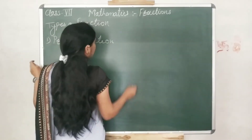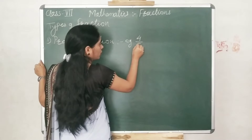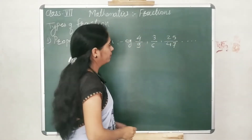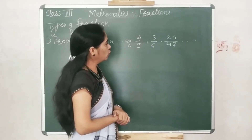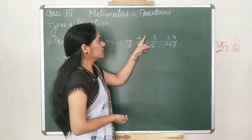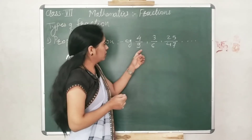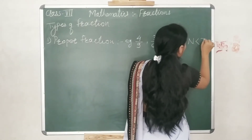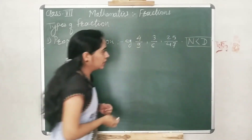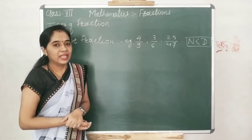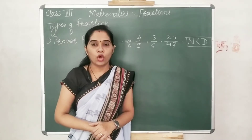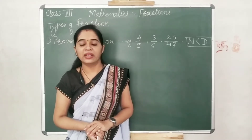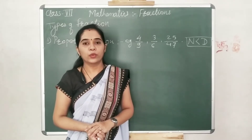For example: 4 upon 9, 3 upon 6, 25 upon 47, and many more. Observe these three fractions. You will notice that in every case the numerator is smaller than the denominator. So we can write: numerator is smaller than denominator. When the numerator is smaller than the denominator, that type of fraction is called a proper fraction.